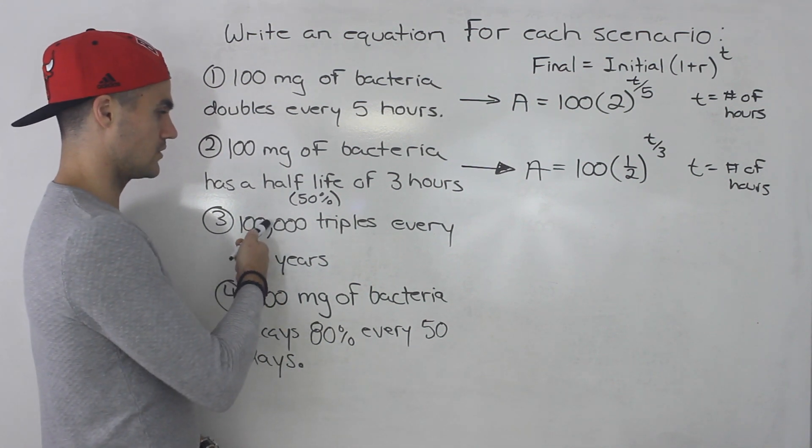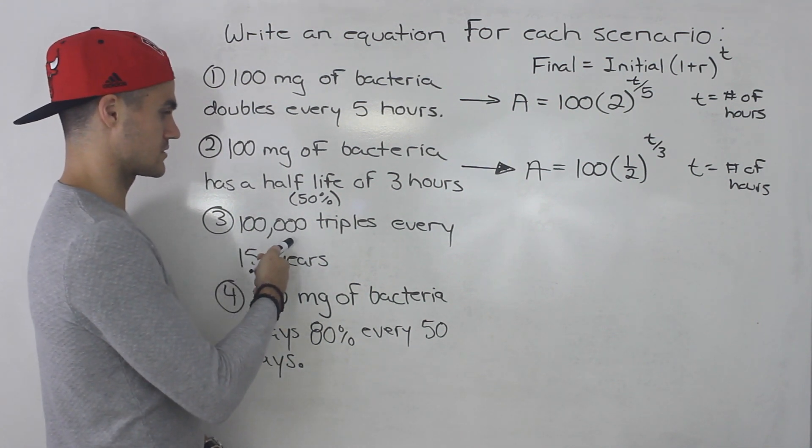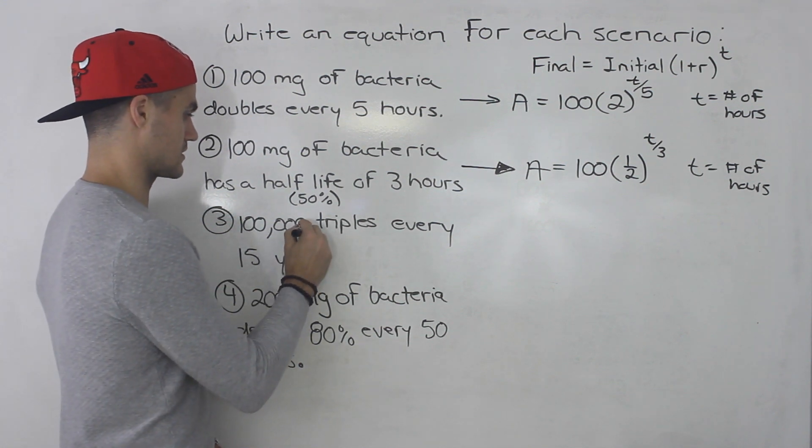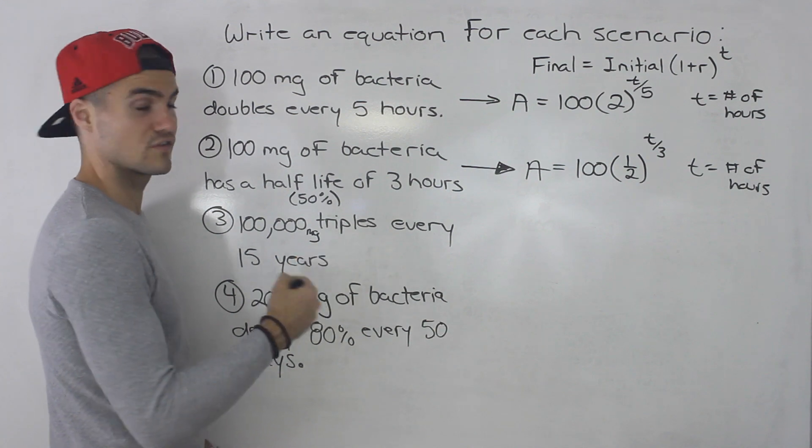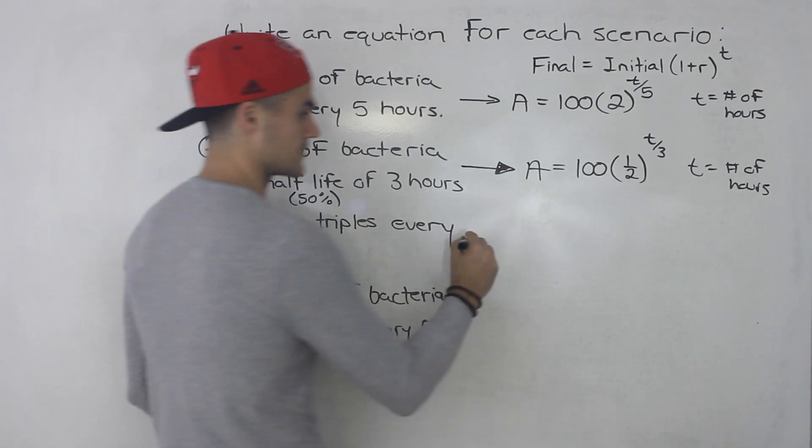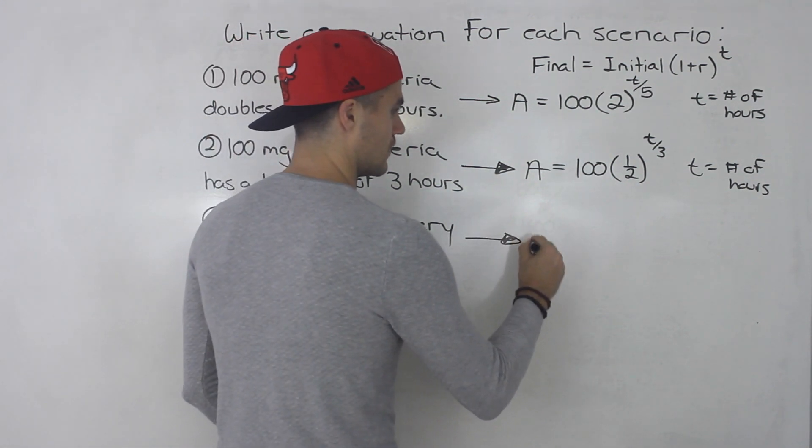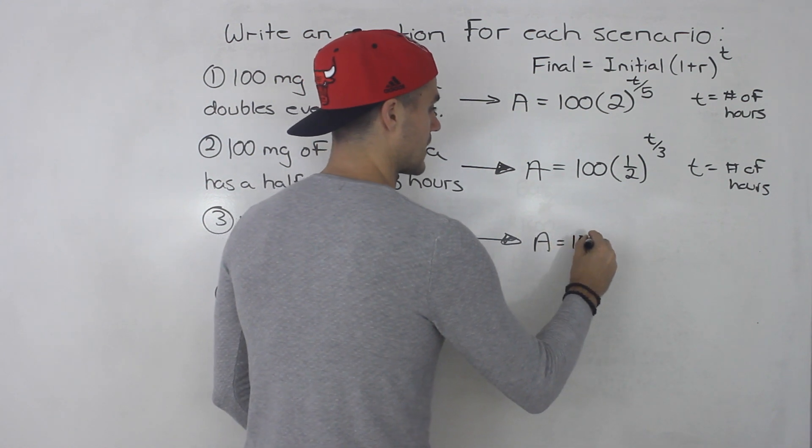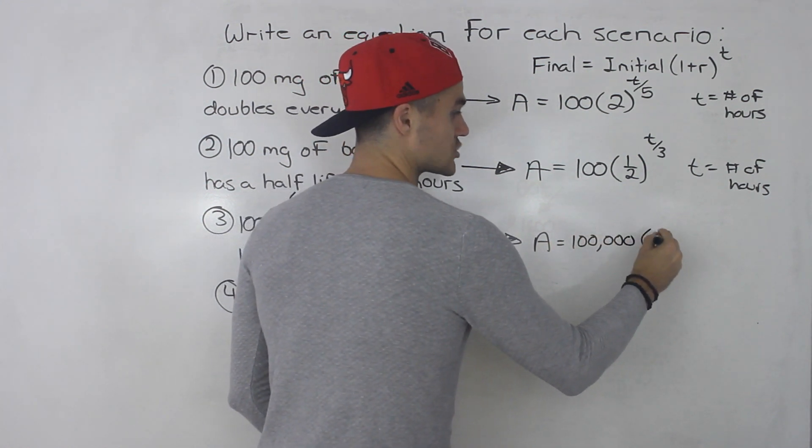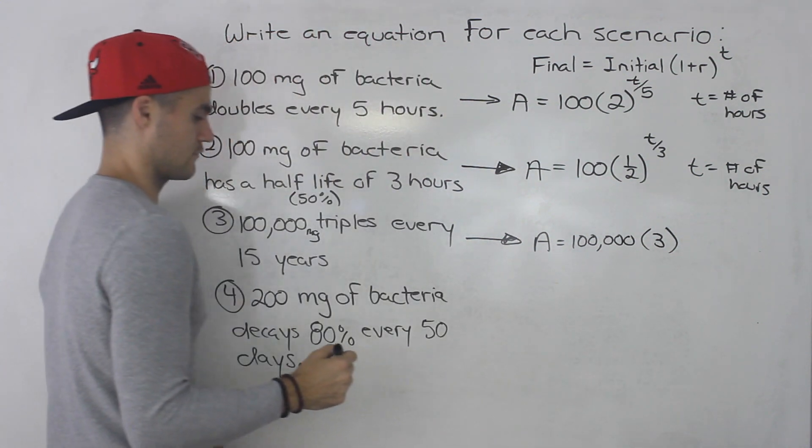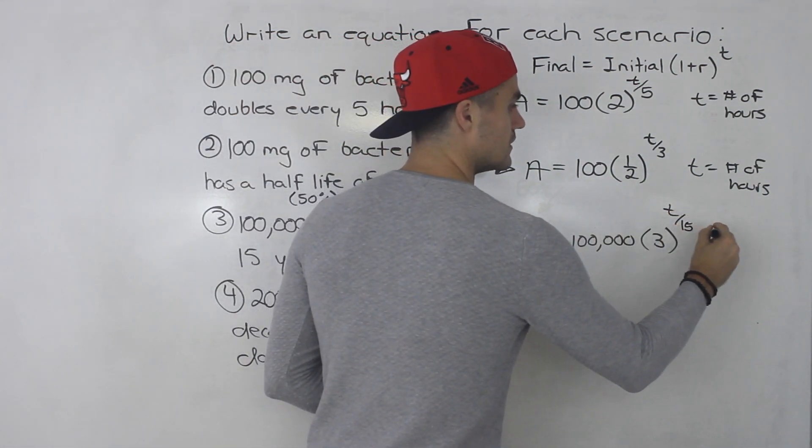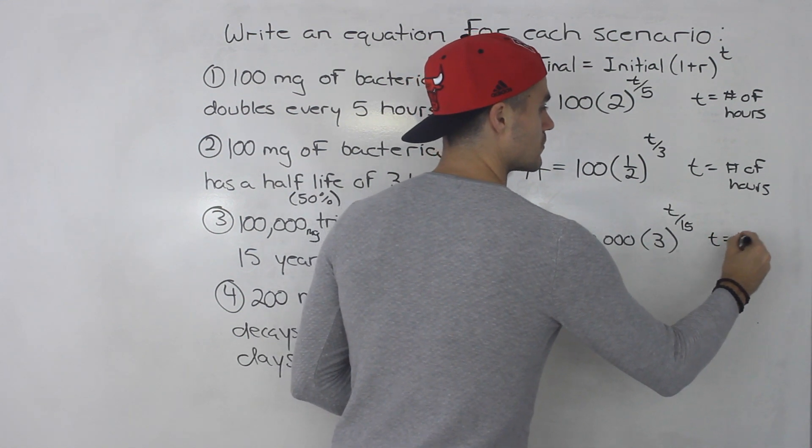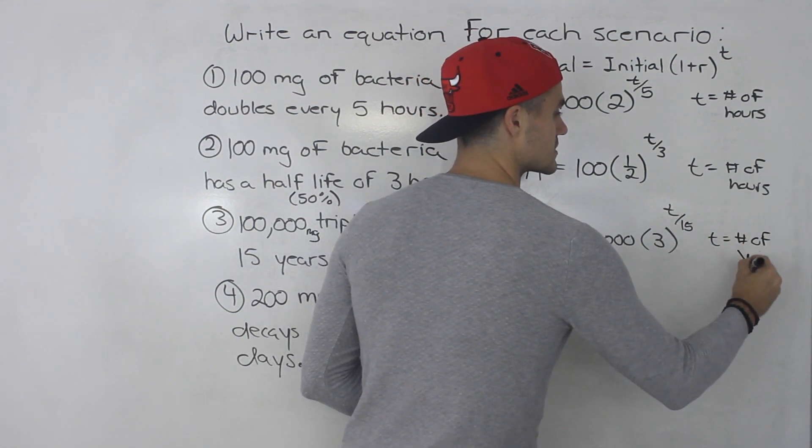Third scenario, 100,000 triples. Let's say 100,000 milligrams here. 100,000 milligrams triples every 15 years. So here, final amount would be the 100,000. It's tripling every 15 years. So this would be t over 15. So t is equal to the number of years in this case.